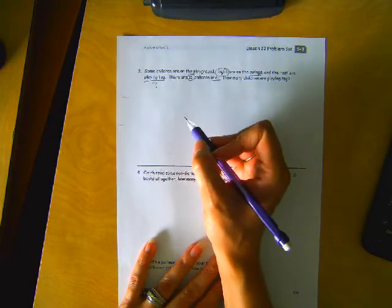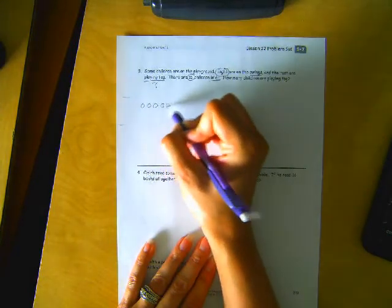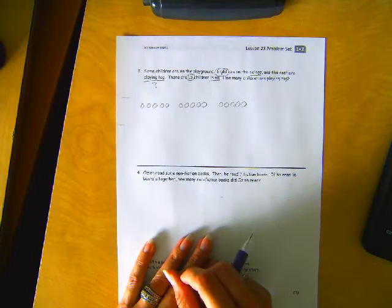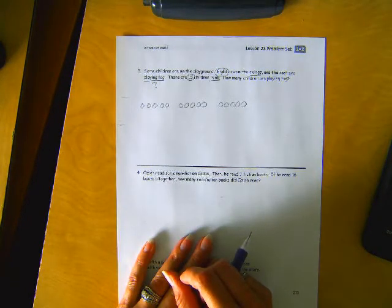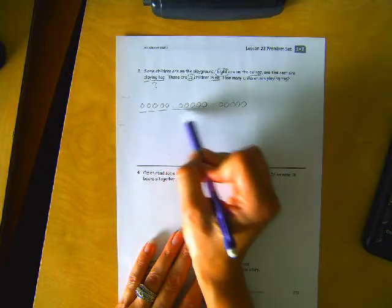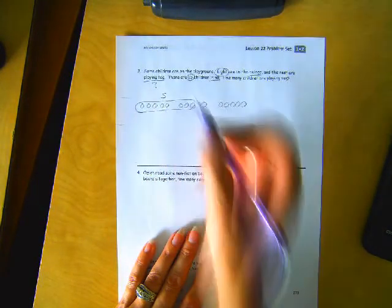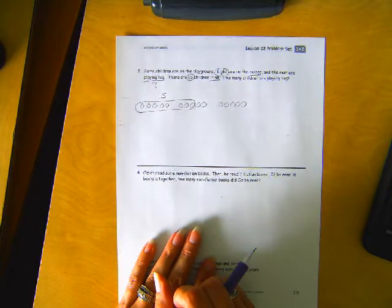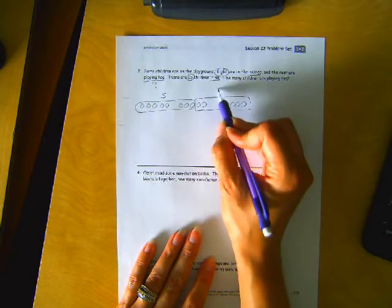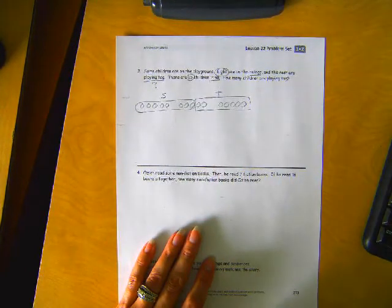I'm going to go ahead and draw 15 children. Eight are on the swings, and I'm going to put an S in the corner for swings, which means the rest of these kiddos are playing tag. T for tag. So we read it, we drew it, we labeled it.